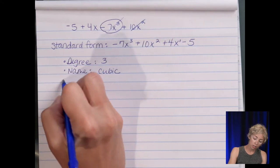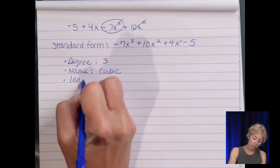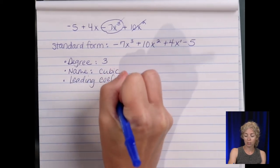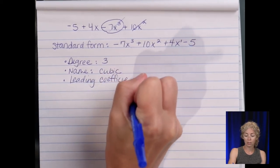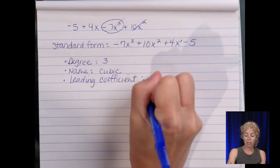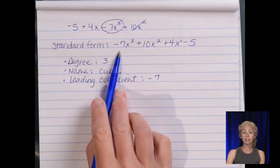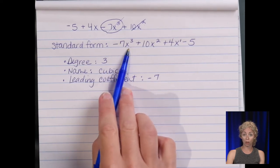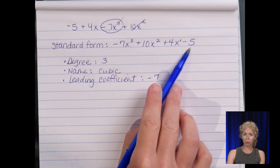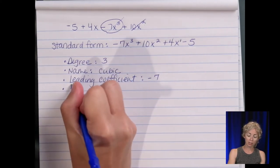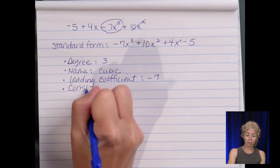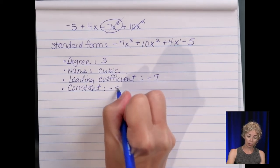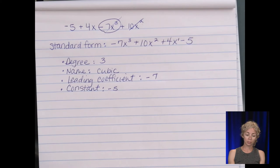Our leading coefficient is a negative seven. So leading it's out front. Coefficient is the number in front of the variable. And then the other number at the end with no variable attached is called the constant. So the constant is a negative five.